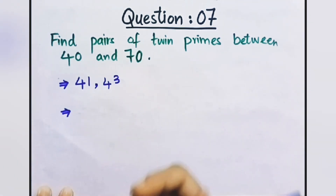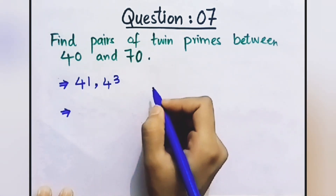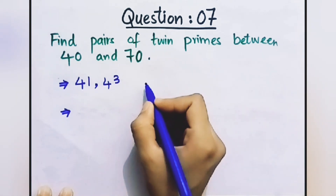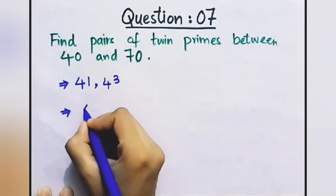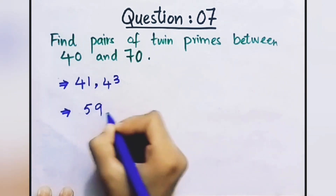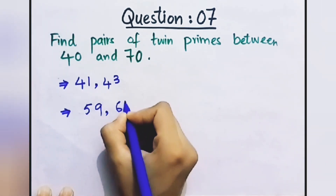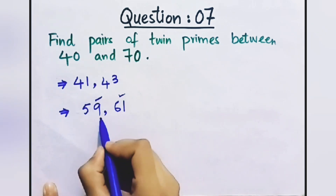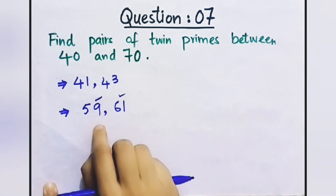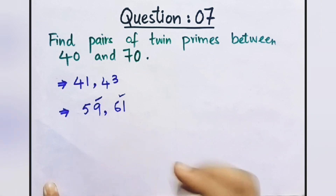Looking for the next pair: 45 is not a prime number. Check 49 — if you subtract 2 you get 47, but 49 itself is not prime. Checking 59: add 2 to get 61. 59 is a prime number and 61 is a prime number, so these are twin primes. So there are two pairs between 40 and 70: 41 and 43, and 59 and 61.